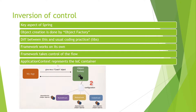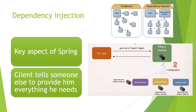Frameworks work on their own. What does that mean? Look at this example: I have an app, I say give me a coach object, and our framework is somewhat of an object factory. It runs on its own based on some configuration, and then it passes the control back to us and then continues to work on its own. The second thing we're going to talk about is dependency injection — the second key aspect of Spring. Dependency injection is a pattern we use to implement inversion of control, where the control being inverted is setting an object's dependencies.